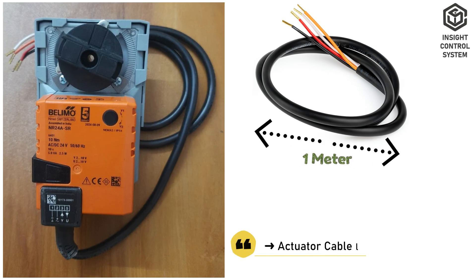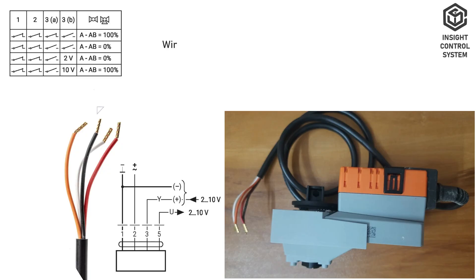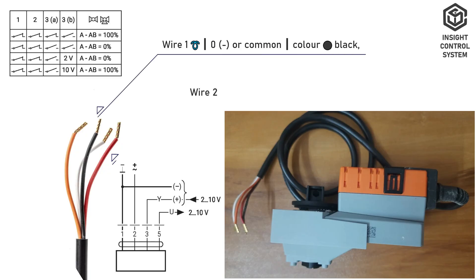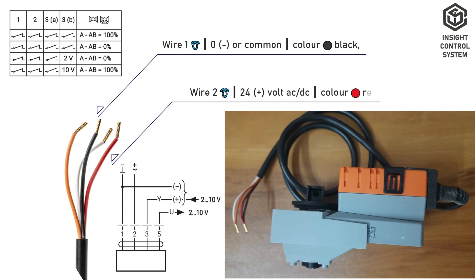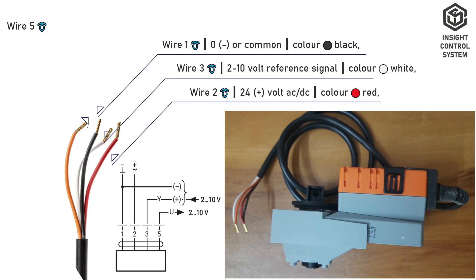Wiring: actuator cable length is 1 m; actuator cable size is 4-core 0.75 mm². Wire 1 is 0V or common, color black. Wire 2 is 24V AC or DC, color red. Wire 3 is 2 to 10V reference signal, color white. Wire 5 is 2 to 10V feedback signal, color orange.